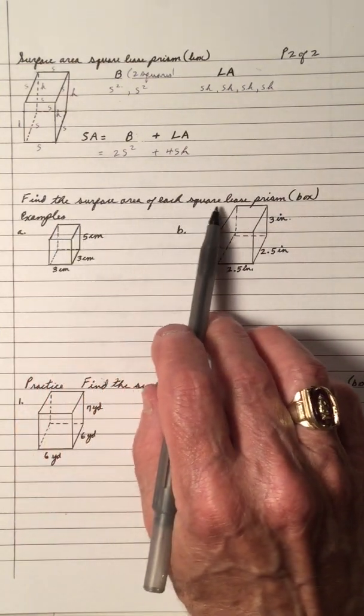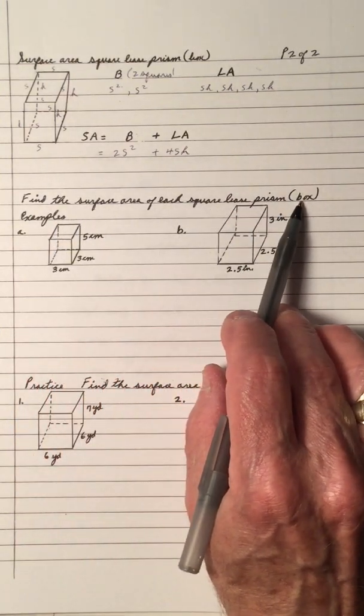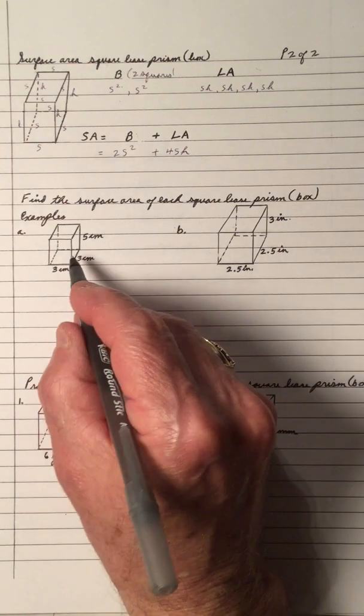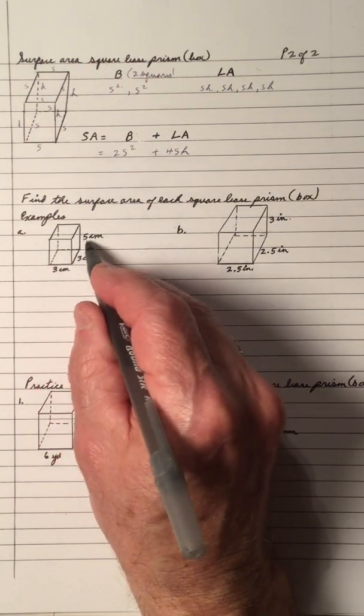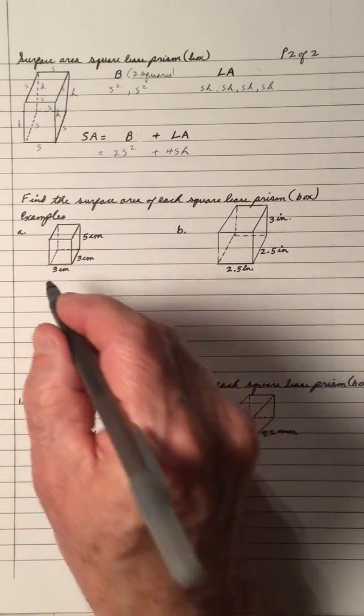Let's find the surface area of the square prism, or what we call the square box. And the bottom is 3 by 3 by 5, and notice they're all the same dimensions.